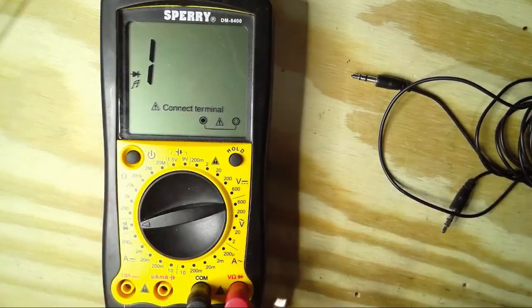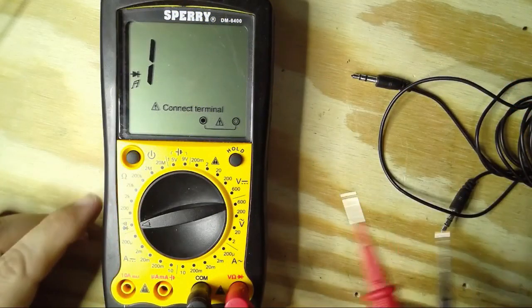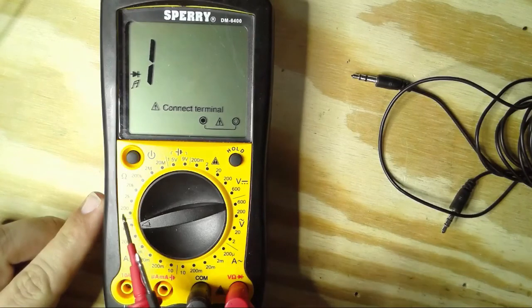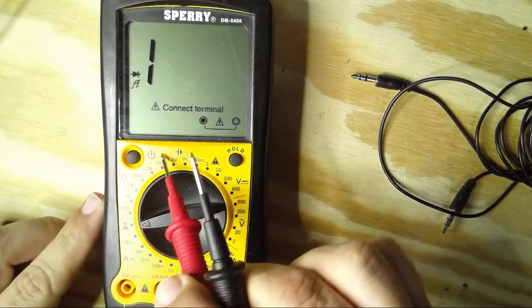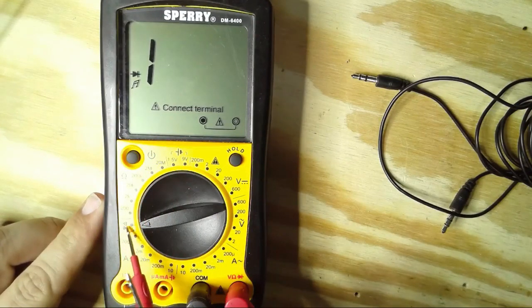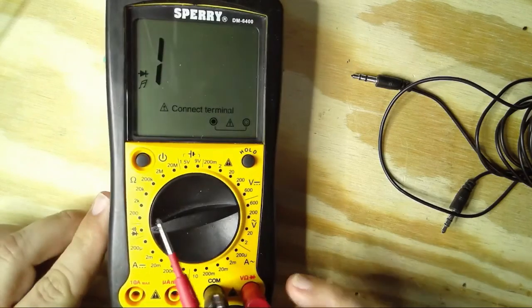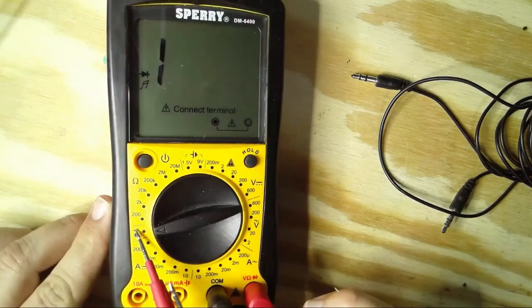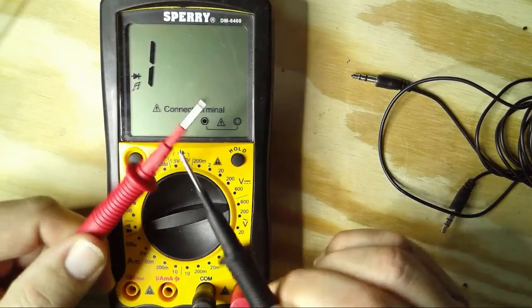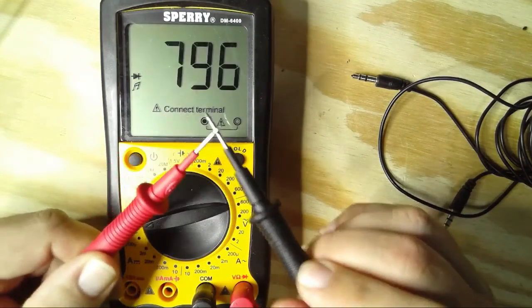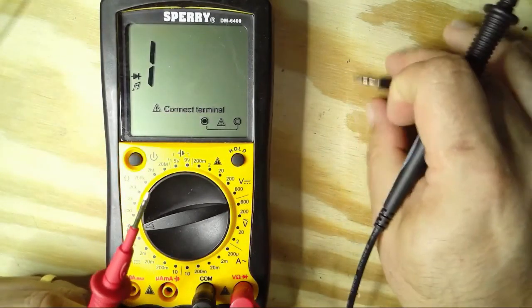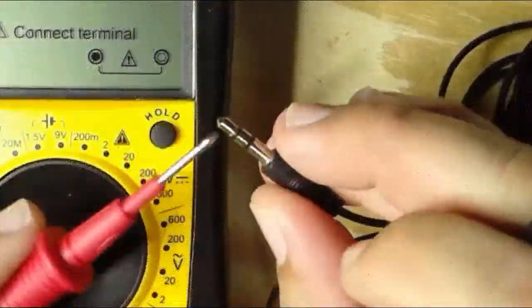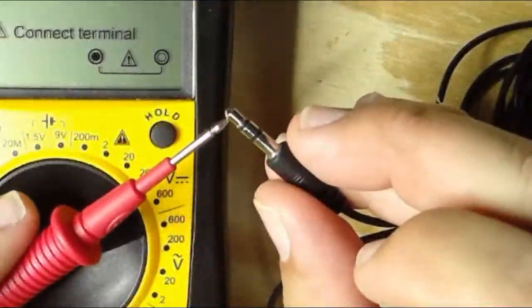You're also going to need a multimeter. It doesn't have to be anything fancy. Anything that has either an ohm reading, a resistance reading, or just a continuity tester like this. This is the setting right here. It's got the little audible symbol on it. And if you push them together, you'll hear that sound. That's going to be very useful because we're going to need to know which of the wires is connected to the tip.